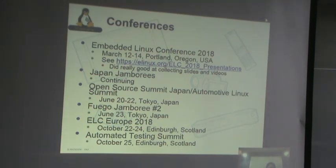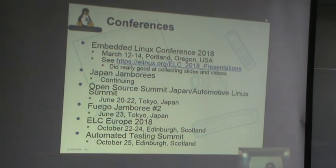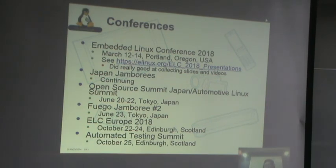There's also the first instance of a new event called the Automated Testing Summit. The Jamboree in June is specific to Fuego, but the Automated Testing Summit is a gathering of all the different people doing testing — KernelCI, LKFT, Linaro, Lava — a lot of people are expressing interest in getting together and talking about automated testing of the kernel and Linux systems. That will also be in Scotland.